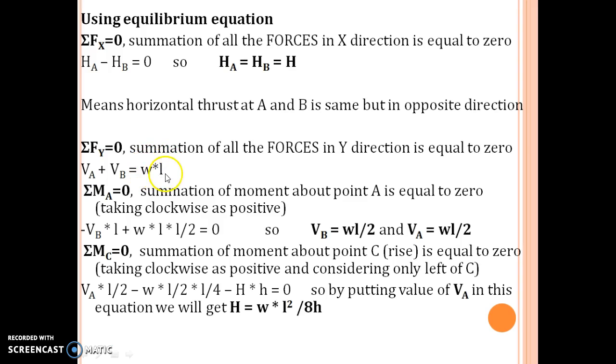Take the moment about A equals 0. So summation of moment about point A equals 0, taking clockwise as positive. So VB will provide anticlockwise direction about A. So VB multiplied by L in minus sign plus W into L, the total loading UDL downward direction, into L by 2 from A equals 0. So we will get VB equals WL by 2. By putting VB in previous equation we will get VA equals WL by 2.